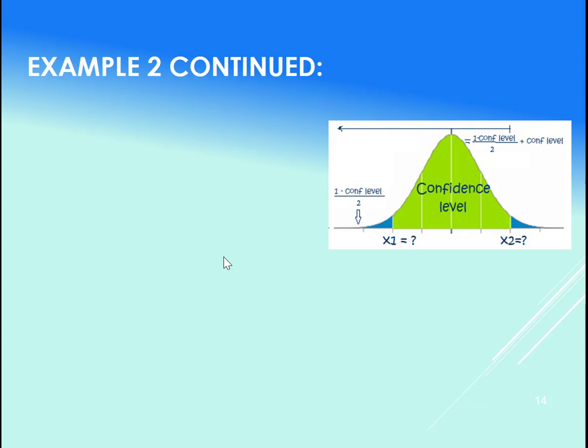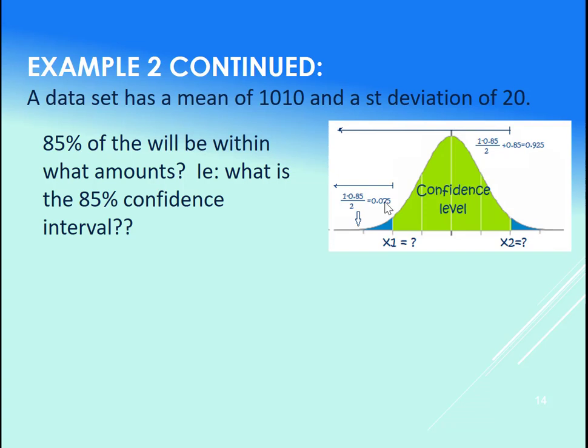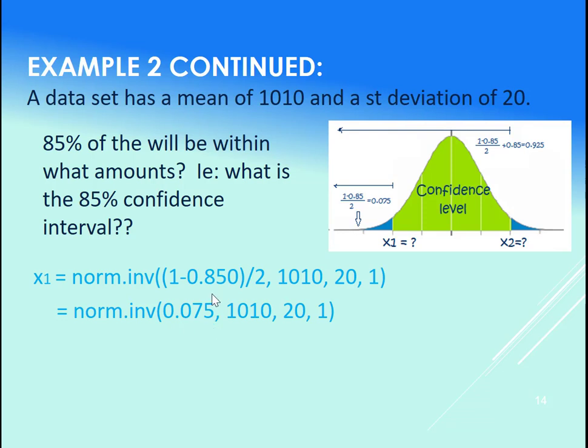So example 2 continued. We're trying to build up a confidence interval. We have a mean of 1010, standard deviation of 20. And we want to know 85%, the 85% confidence interval, or 85% of the data will be between. To get the area to the left of the X1, take 1 minus the 85% divided by 2. That turns out to be 0.075, or 7.5%. So 85% in the middle is going to leave us 15% split between the two tails, or 7.5% on each side. Plugging this into Excel, we would use the NORM.INV call to get this X1. We'd use NORM.INV of the 0.075, or you could do this whole calculation, just be careful, use brackets here. That'll turn out to be 981.21.